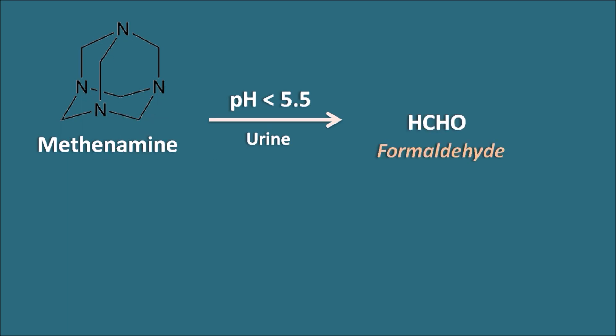Now, how does Methenamine act? Methenamine, when it is admitted into the body, reaches into the urine. When the urinary pH is acidic in nature, so that pH is less than 5.5, then Methenamine is going to be broken down into two fragments. One of these fragments is formaldehyde and another one is ammonia. Now this formaldehyde has a bacteriostatic effect and it inhibits the bacterial growth in the urine.